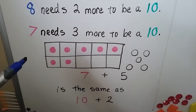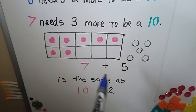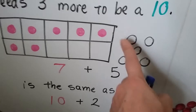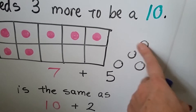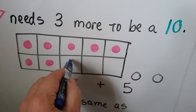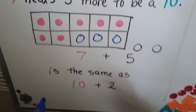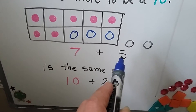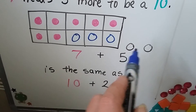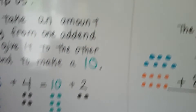7 needs 3 more to be a 10, so if we have 7 plus 5, it can take 3 away from the 5. We take 1, 2, 3 of these away and give it to the 7 to make a 10, and the 5 ends up becoming a 2. Now we have 10 plus 2.